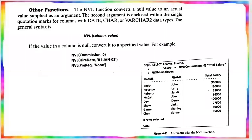We continue with the next topic: other functions. The first one is the NVL function. The name indicates null value function. It converts a null value to an actual value that is being supplied as an argument.